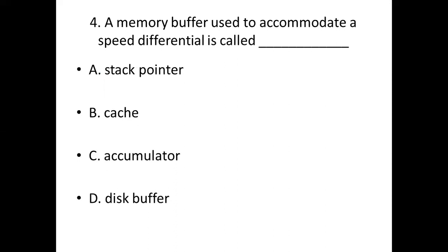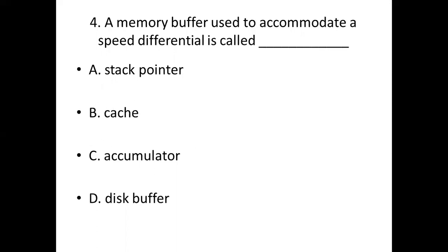Question 4: A memory buffer used to accommodate a speed differential is called dash. Option A: stack pointer. Option B: cache. Option C: accumulator. Option D: disk buffer. Answer: Option B, cache.